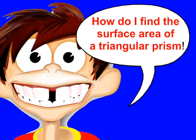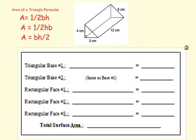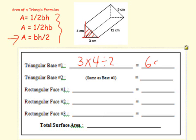So how exactly do I find the surface area of a triangular prism? The first thing we're going to do is find the area of the base. To find the area of the triangle, I'll use the formula: area equals base times height divided by 2. So base is 3 times height is 4, divided by 2. That's 12 divided by 2, which is 6 square centimeters.